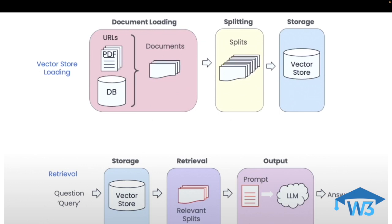Whatever data you have — whether in the form of URLs, PDF, PPT format, or databases — the data from these sources is first loaded into documents. The document sizes could be very large to process, so these documents are further split into smaller chunks. These chunks of data are then stored in a vector store. In a vector store, data is stored in context to similarity, meaning similar types of data are stored together, which plays a crucial role in fetching relevant information for your queries.